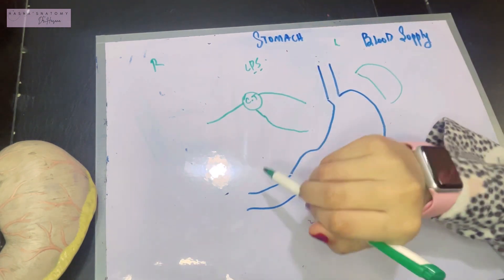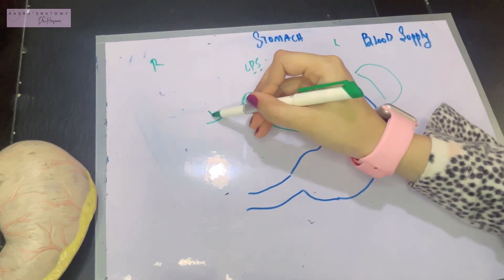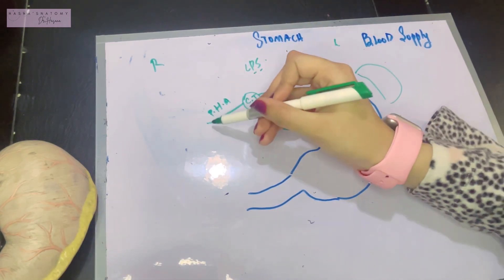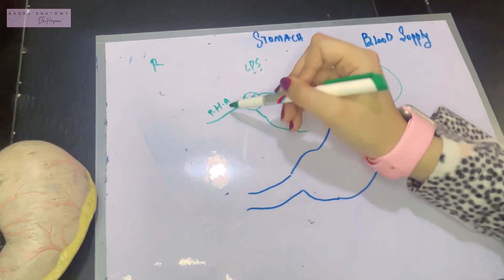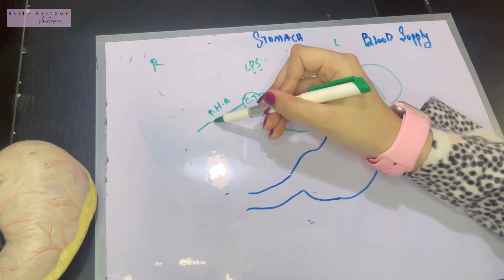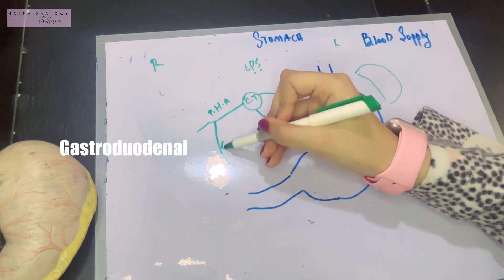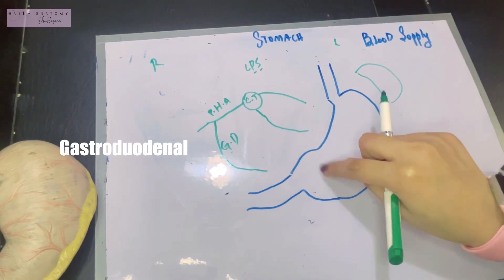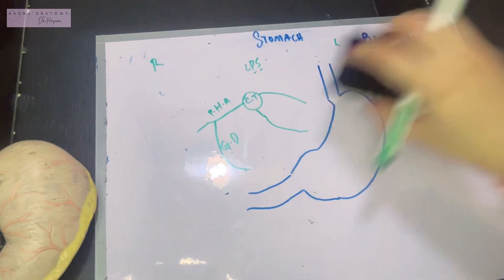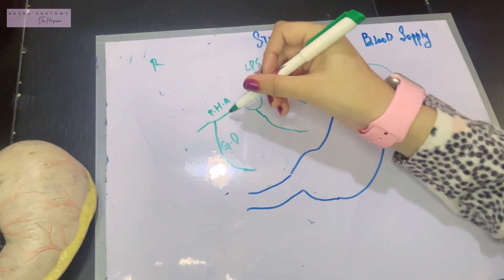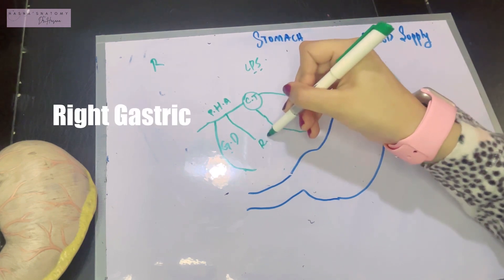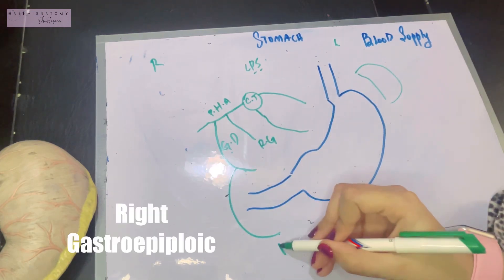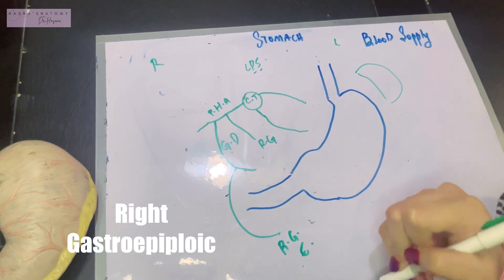Now, what branches do these branches give? The proper hepatic artery actually begins as the common hepatic artery; however, distal to its origin, it becomes the proper hepatic artery. The proper hepatic artery gives a branch called the gastroduodenal artery — since it's gastroduodenal, draw it close to the gastric part and the duodenum. The proper hepatic artery also gives a branch known as the right gastric artery. The gastroduodenal artery further gives a branch known as the right gastroepiploic artery.